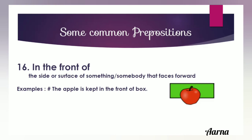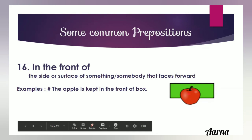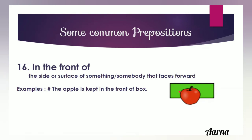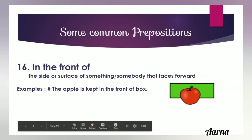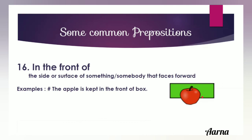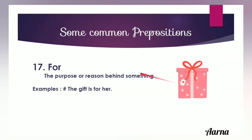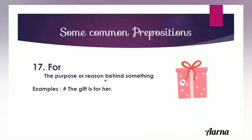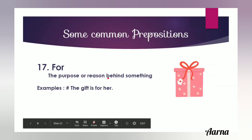The next preposition is 'in front of', meaning the side or surface of something or somebody that faces forward. You can consider it the opposite of 'behind'. For example, 'the apple is placed in front of the box' — the apple is facing forward from the box, so we use 'in front of'. The next preposition is 'for', showing the purpose or reason behind something. For example, 'the gift is for her' — the reason for having the gift is that it is for her.